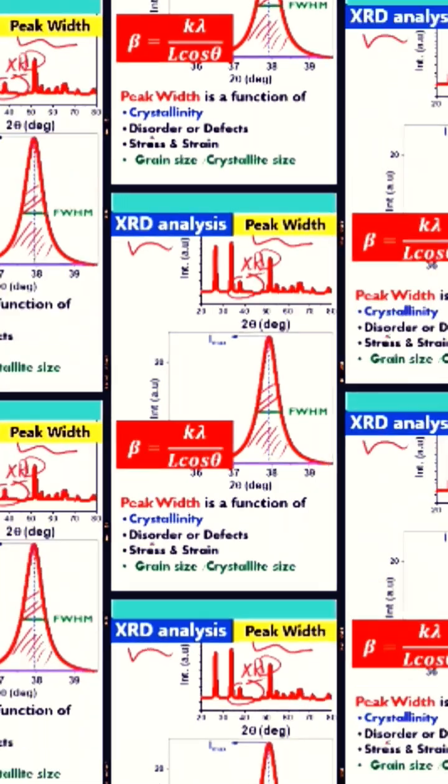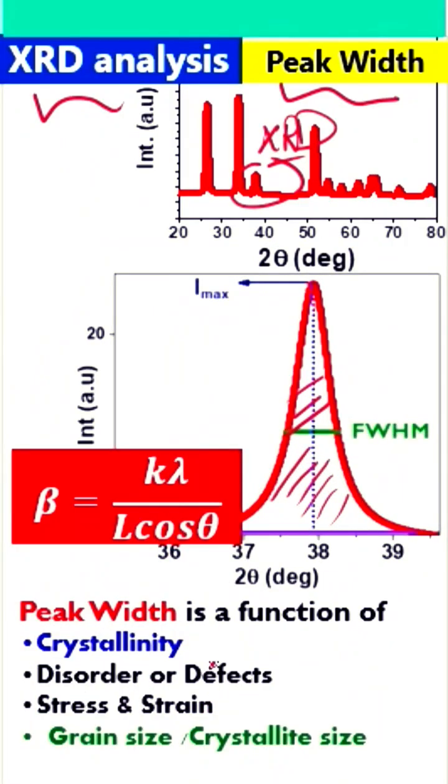The second is the disorder or defects. If we have defects in materials, we will have broad peak width.